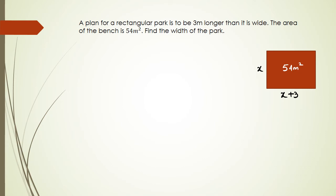We're trying to figure out the width of the park, so we're trying to figure out x. What we know is area of a rectangle is base times height equals area. So we have (x+3) multiplied by x equals area, which equals 54 meters squared.